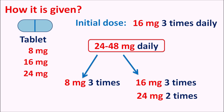This drug is contraindicated in pheochromocytoma and in peptic ulcers, and may increase gastrointestinal side effects such as dyspepsia, bloating, and abdominal pain. It should be carefully given in patients with asthma. The drug is given as 16 mg three times daily, but the dose may vary from 24 to 48 mg per day given as divided doses.